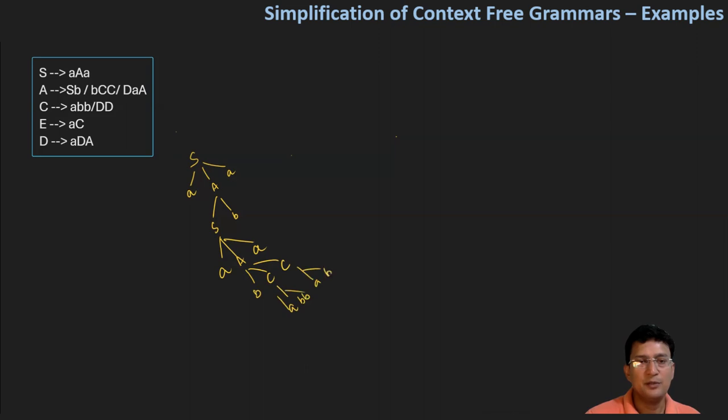And again, this also produces abb. So you see S, A, and C are generating symbols - they can all reach terminal symbols. These symbols will be kept in our productions.